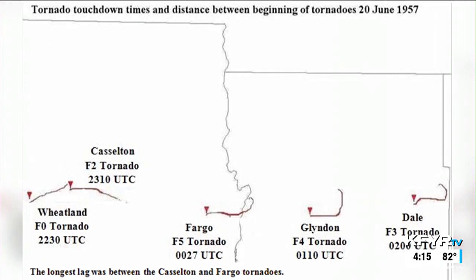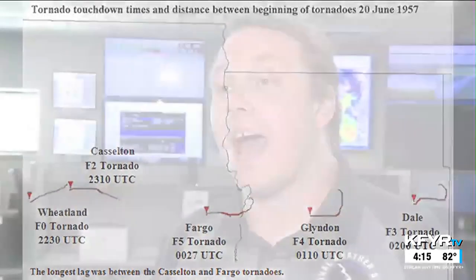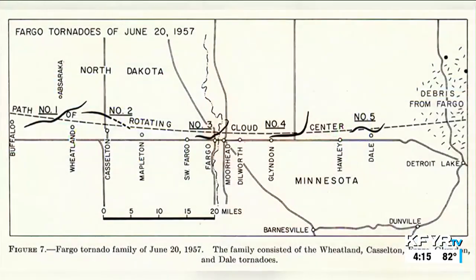The first tornado originated near Wheatland, North Dakota; a second near Castleton. The Fargo tornado was actually the third in this family of five tornadoes, all very well documented, and it was the strongest. There were two other tornadoes in Minnesota — one near Glendon rated F4 — so a single supercell produced two violent F4/F5-level tornadoes that evening in June 1957.